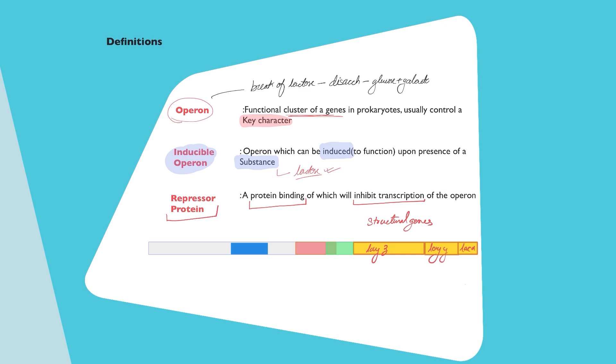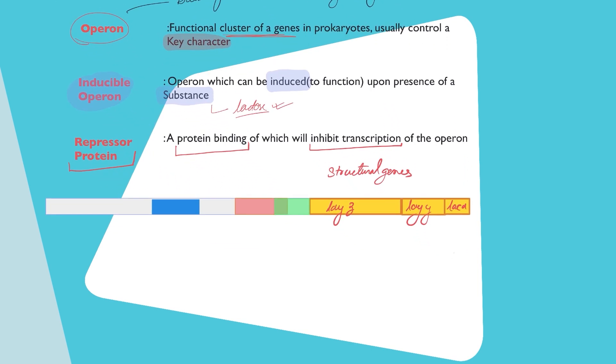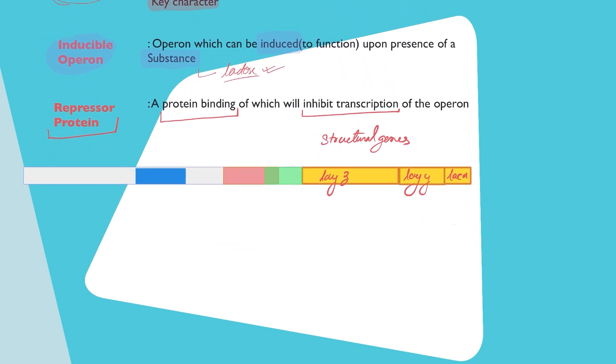These three genes code different enzymes one after the other. You have LAC-Z that codes beta-galactosidase that is going to break the lactose into glucose and galactose. Then you have LAC-Y, which gives a permease that allows the lactose to get inside the cell. And finally, you have LAC-A. LAC-A makes a transacetylase. We do not know exactly the function of LAC-A, nevertheless, that is important.